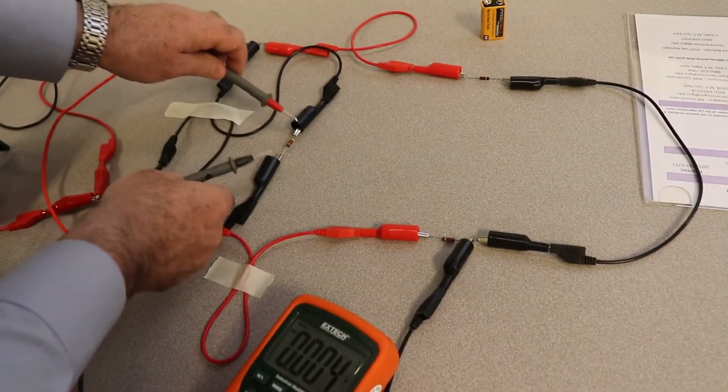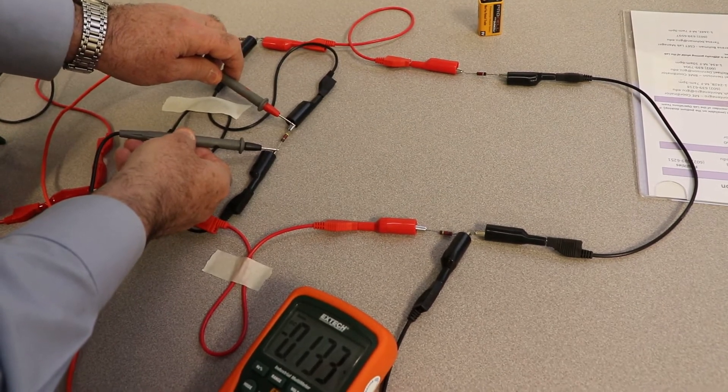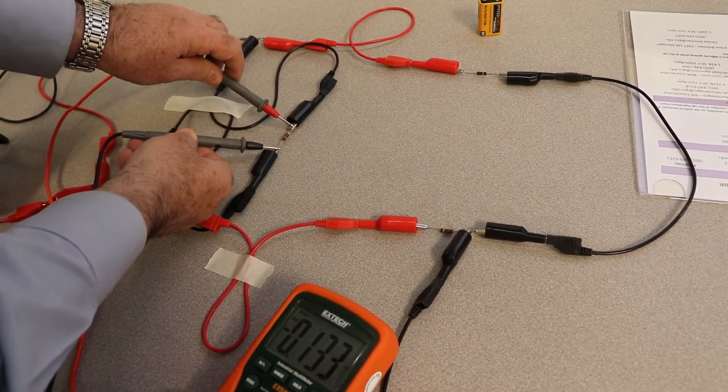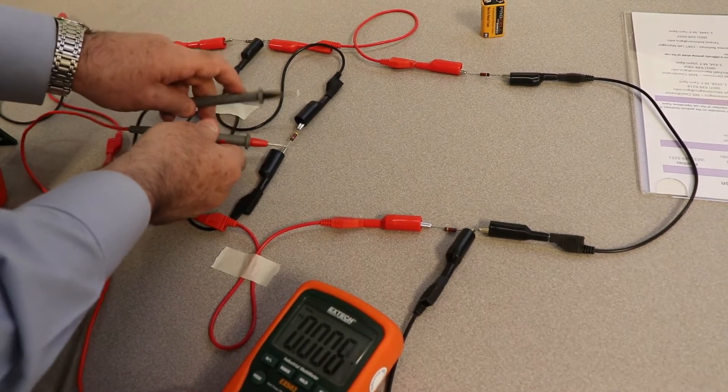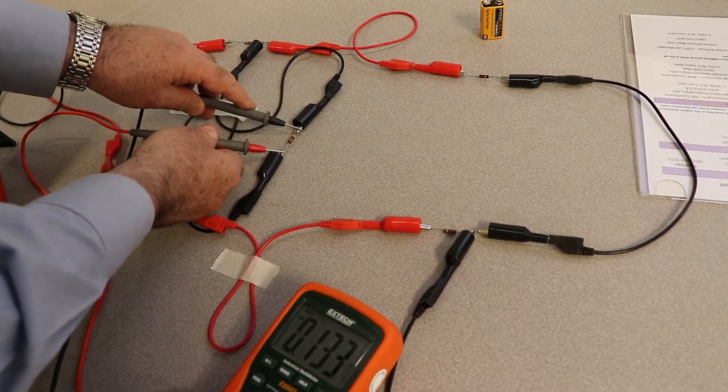Now I'm going to put the red up on top here. And you see current's actually flowing the other way. It's not flowing from red to black. It's flowing from black to red. So that means it's going up.